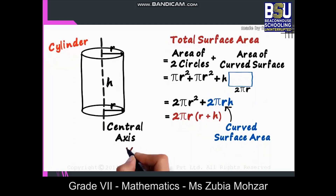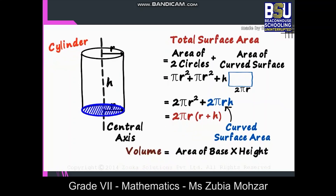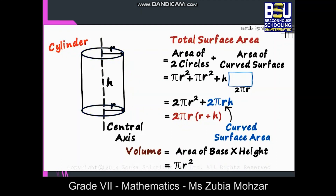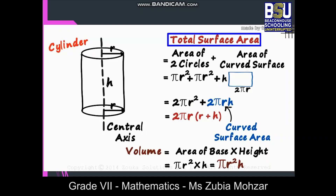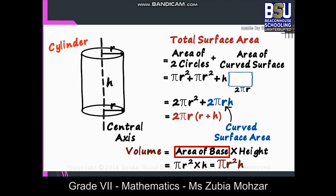And finally, we come to the volume of a cylinder. It equals the area of its base times its height. As the base is circular, its area will be πr². And its height is h — that's the volume of a cylinder: πr²h. You don't have to memorize any of this. You can easily derive the total surface area, and for the volume, you just need to know that it is the area of its base or cross section times its height.